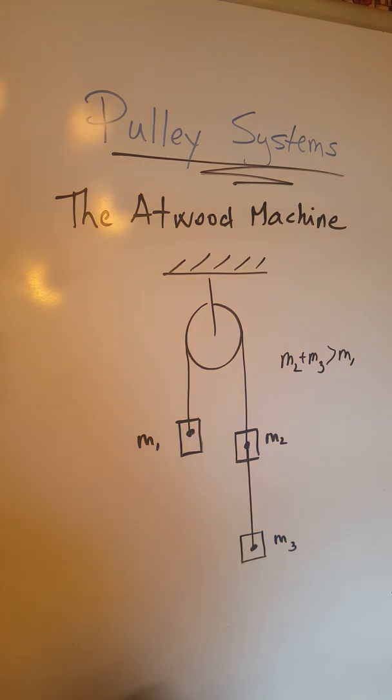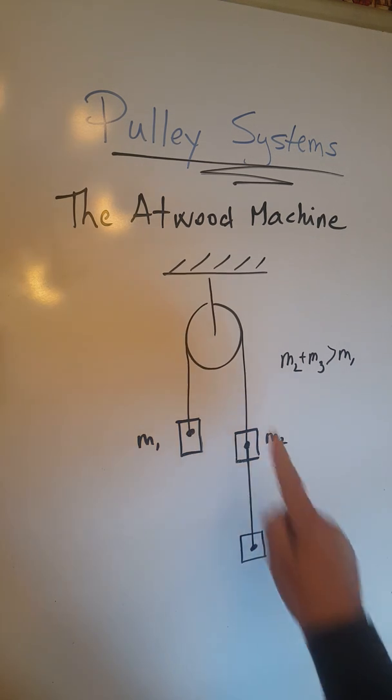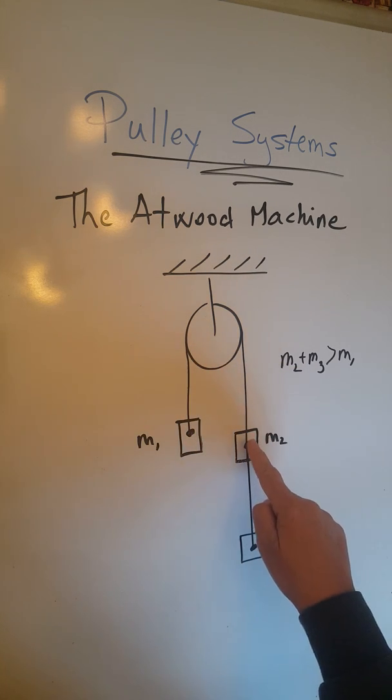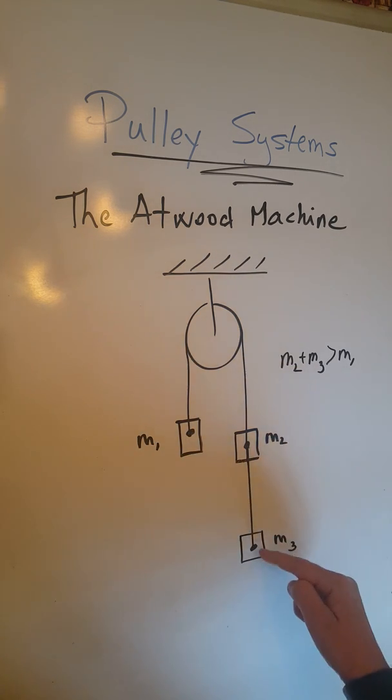Hello again, we are going to now look at another pulley system, another system called the Atwood machine. In this case we are going to have one, two, three objects, an ideal pulley, and one string here connecting m1 and m2, and another string here connecting m2 and m3.